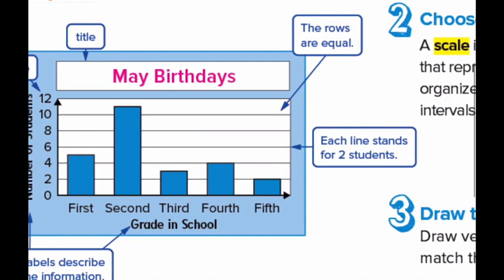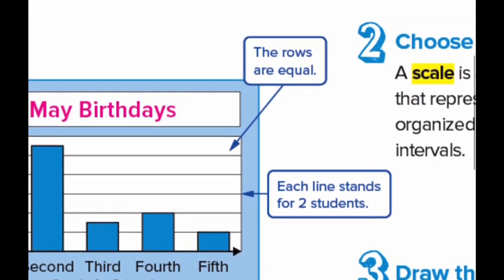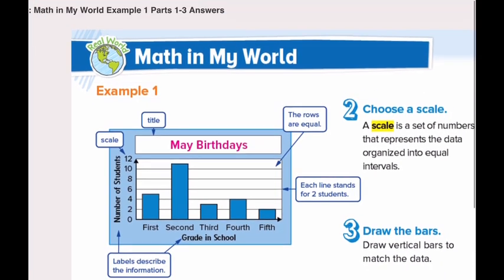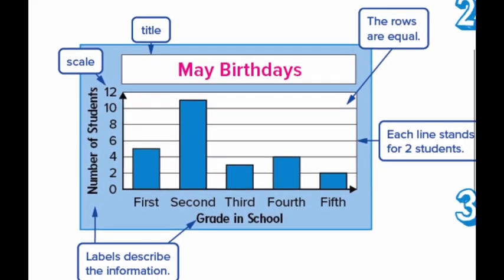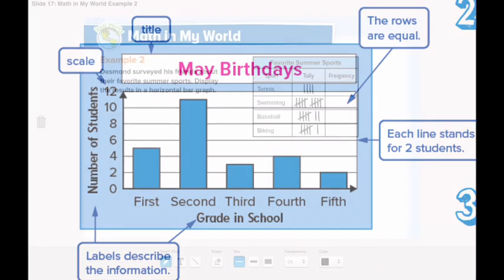Each line stands for 2 students and the rows are equal. In a scaled bar graph, all the rows are equal and each line may represent more than one. For example, here each line represents 2 students, not 1.